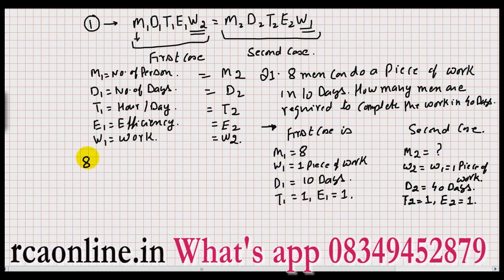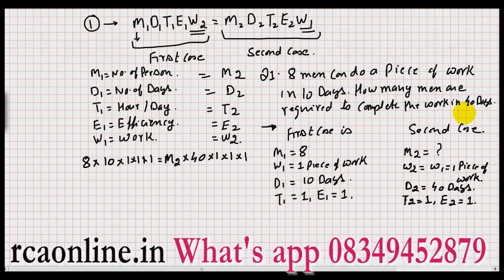Now applying the equation: 8 × 10 × 1 × 1 × 1 = M2 × 40 × 1 × 1 × 1. So M2 = (8 × 10) / 40 = 2. So if 2 men work, the same work will be completed in 40 days. This is a simple approach to solve questions of time and work.